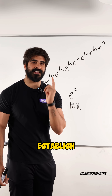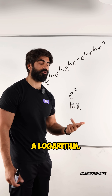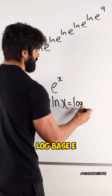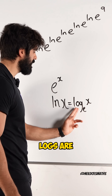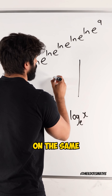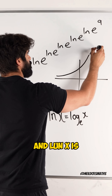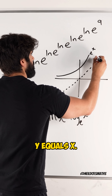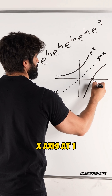First, let's establish the connection between e to the x and ln x. Now, ln is just a logarithm — it's actually a posh way of saying log base e of x. They are inverse functions of each other. Logs are inverses of exponentials. They look like this on the same axes: e to the x shows exponential growth, and ln x is a reflection of e to the x in the line y equals x. So the ln graph looks like this.